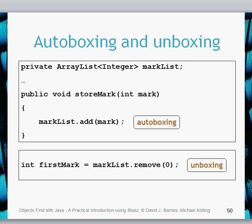Unboxing works the other way: it takes an Integer object and implicitly converts it into a type int. You can see that we call remove on markList at index zero — that returns an object of the same type as the ArrayList, which is Integer. However, the variable intFirstMark is of type int, so unboxing automatically converts the Integer into a type int.